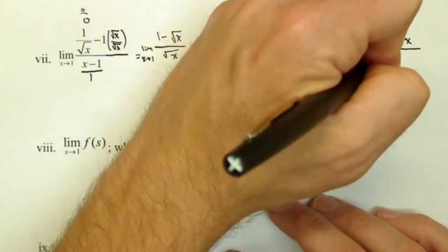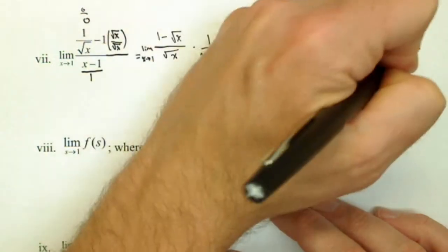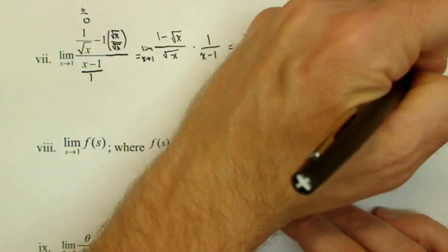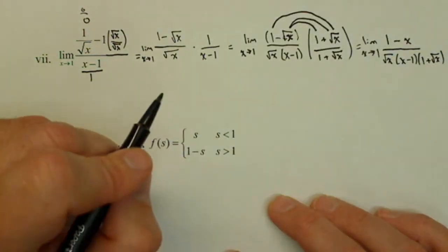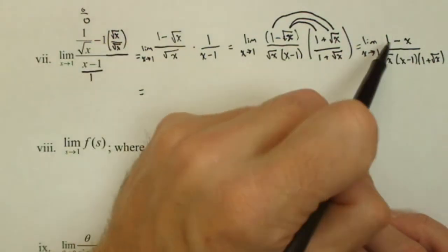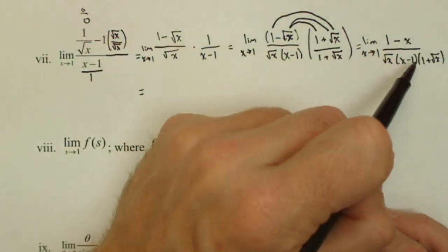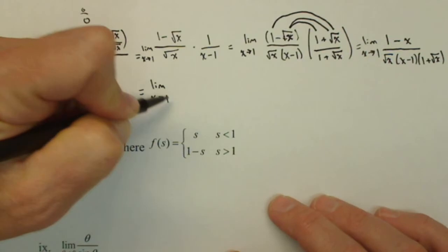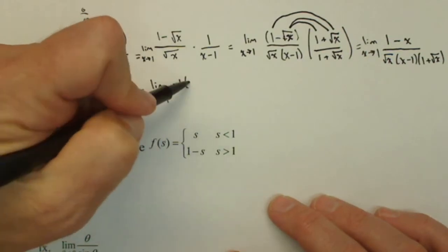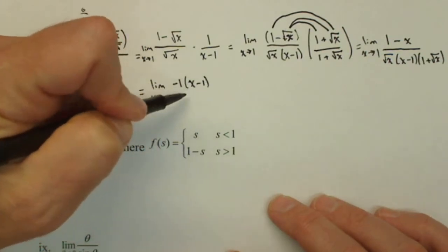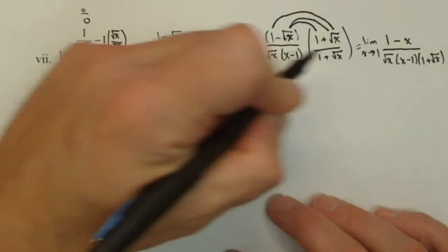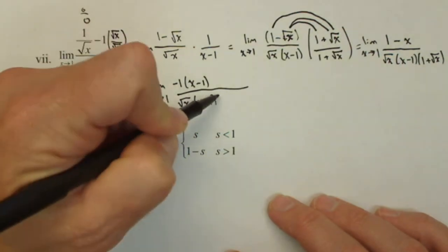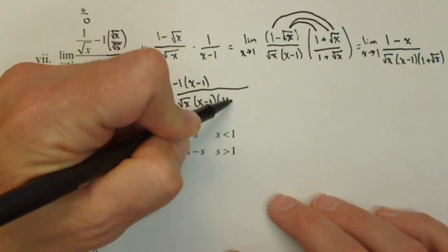So that's the new numerator. The denominator's a little bit messy, but we're not going to mess around with it too much right now. x minus 1, and we'll just leave this as 1 plus square root of x for right now. All right. Now, notice this. I have a 1 minus x here and an x minus 1. They're very similar. In fact, all I need to do is factor out a negative 1 on top. So negative 1 times, and I can rewrite that as x minus 1 over square root of x times x minus 1 times 1 plus square root of x.